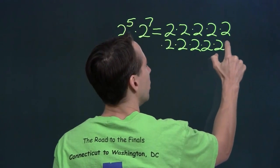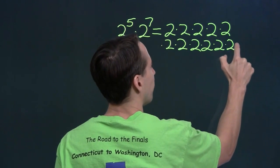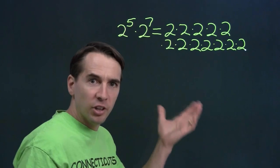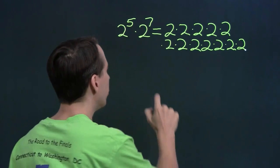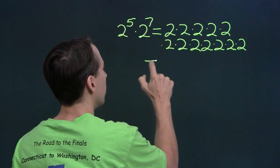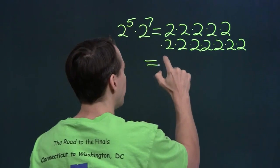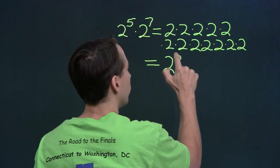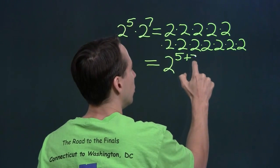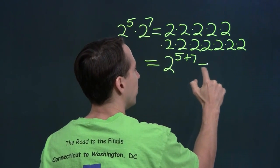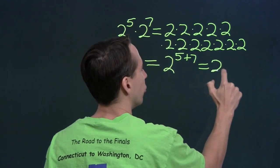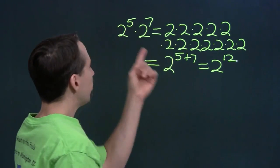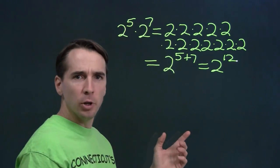Well, this is interesting. I started with five twos. I multiplied in seven more twos. That means I have a total of just five plus seven twos. So this is just two to the five plus seven — of course, that's just two to the twelfth. So we just added up the exponents.